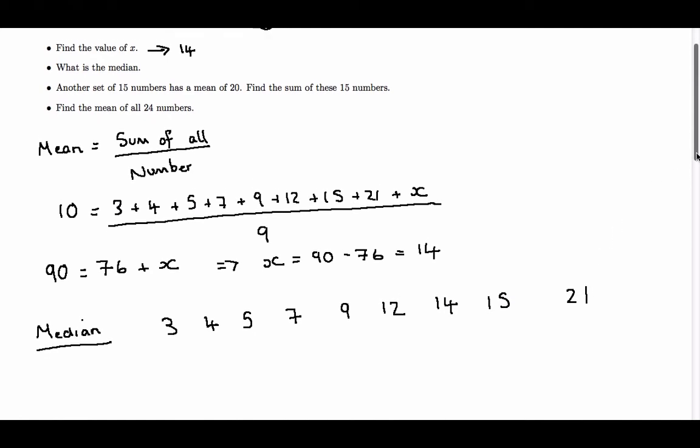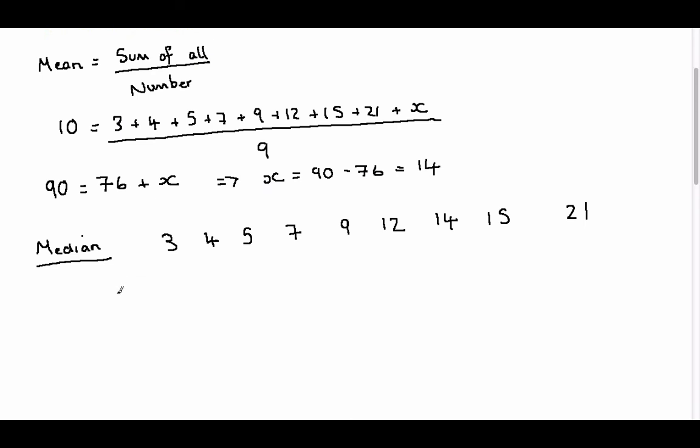So the median value is the middle value, and the middle value we calculate by doing 9 plus 1 over 2. So that is 5. So the median is the fifth value. So all we do is calculate the median by moving along to find the fifth value. So it's 1, 2, 3, 4, 5.